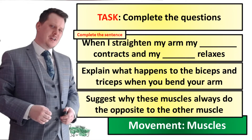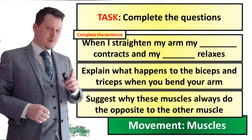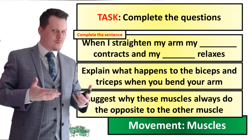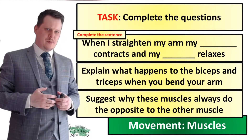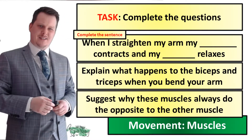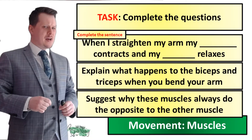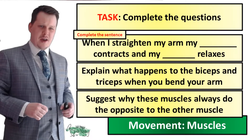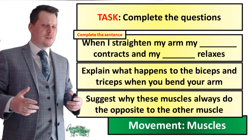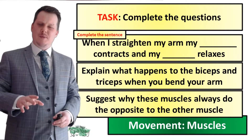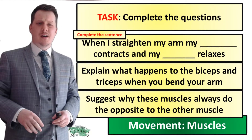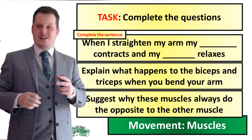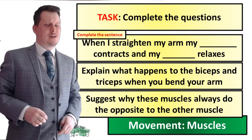When we straighten the arm the bicep relaxes but the tricep contracts, and when we bend the arm the bicep contracts but the tricep relaxes. Complete this sentence: 'When I straighten my arm my something contracts and my something relaxes.' Also answer: explain what happens to the biceps and triceps when you bend your arm, and suggest why these muscles always do the opposite to the other muscle.